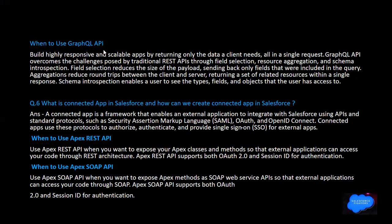When to use GraphQL API: use it for highly responsive and highly scalable apps, returning only the data the client needs in a single request. GraphQL API overcomes challenges of traditional REST API through field selections, resource aggregations, and schema introspection. Field selections reduce the size of the payload, sending back only fields included in the query. Aggregations reduce round trips between the client and server, returning the state of related resources in a single response. Schema introspection enables users to see the type fields and objects that the user has access to.